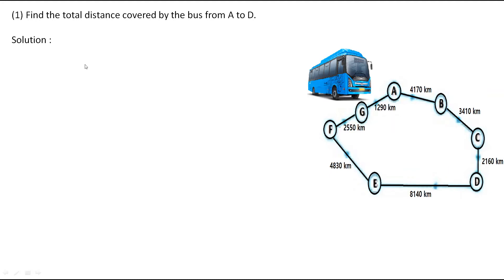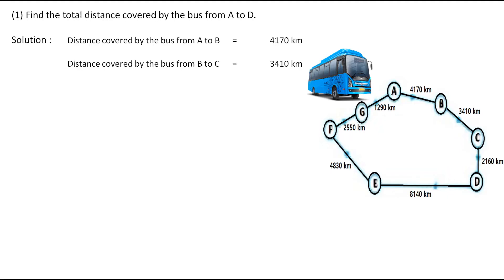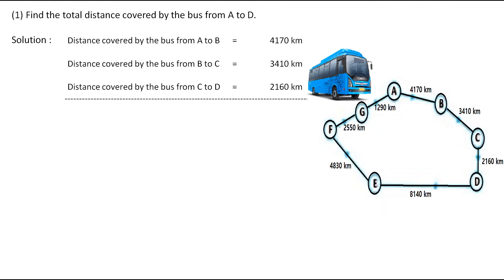The first question is: find the total distance covered by the bus from A to D. Before going to D it reached destination B, then C, and then D. So to find the total distance we have to add up these distances. The distance from A to B is 4170 km, B to C is 3410 km, and C to D is 2160 km. So the total distance covered by the bus from A to D is 9740 km.